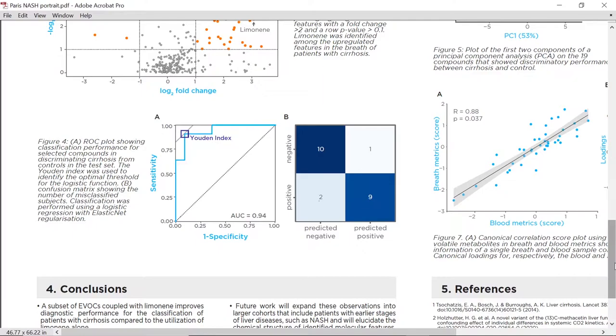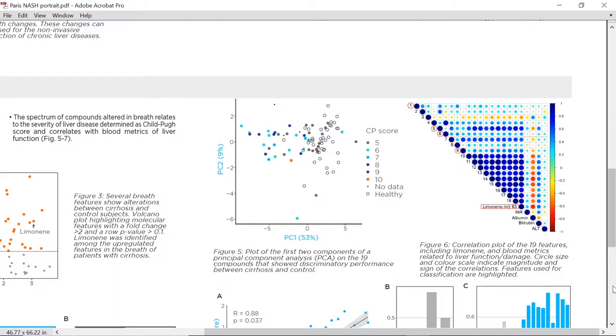As we can see in Figure 4, a classification model generated using a training set showed an area under the ROC curve of 0.94 for a test set, indicating that the combination of these compounds provides an excellent classification performance for cirrhosis.